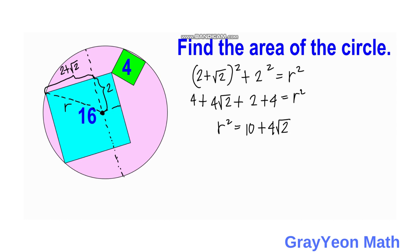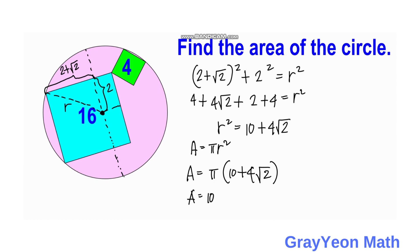Since the area of the circle is π r², we have Area = π × (10 + 4√2) = (10 + 4√2)π square units. This is the same answer we obtained using the intersecting chords theorem.